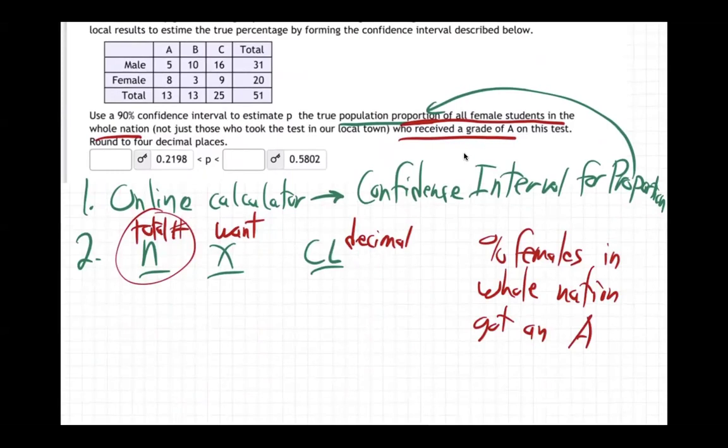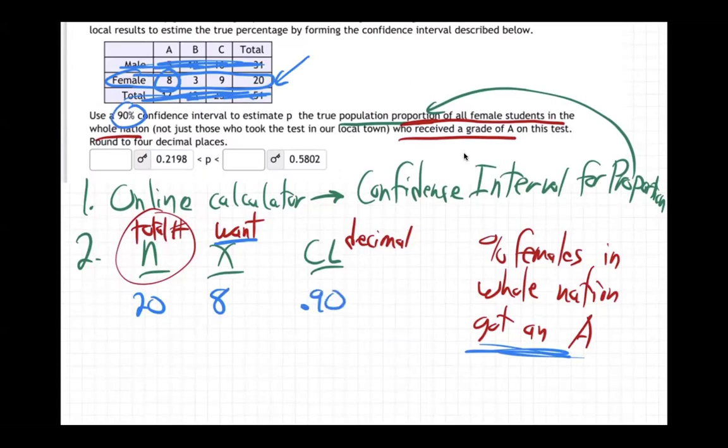So how are we going to figure that out? Well, if you look at the female information, that means this problem has nothing to do with the males. We just forget about the males and forget about the total. All we care about is the female information. So how many total females were in our survey? Twenty. How many got an A? Eight. Eight out of twenty in our survey got an A. What's our confidence level? Ninety, so make sure that's a decimal, 0.90.